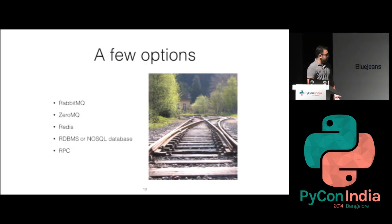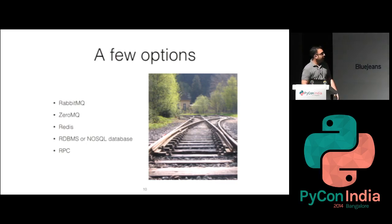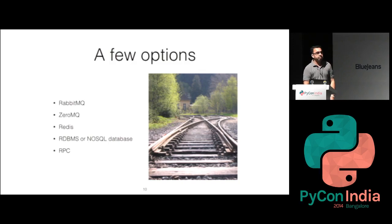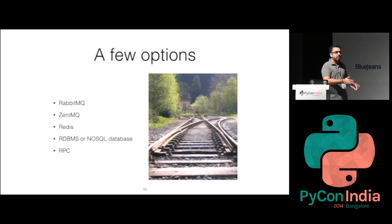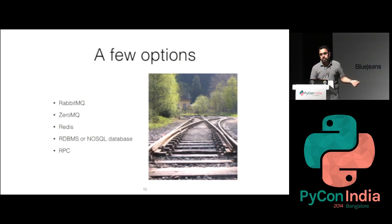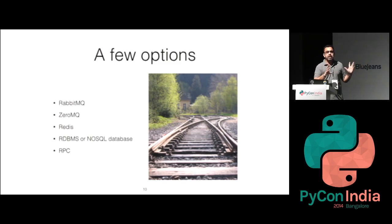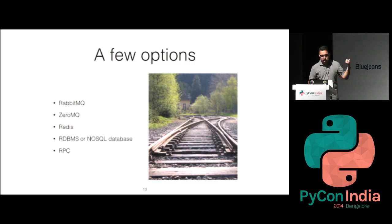What are the options in Python? First, RabbitMQ — a full-fledged AMQP message broker with a centralized broker responsible for routing messages from publishers to subscribers with guarantees. It follows the AMQP format with exchanges, fan-in, fan-out, routing, and queues. If you need all the guarantees and don't want to write all that logic yourself, and you want something rock solid that you can trust, go with something like RabbitMQ.